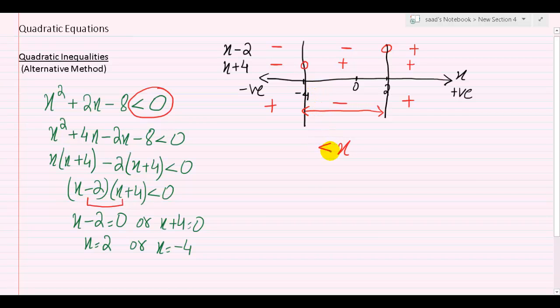x is greater than negative 4, and x is less than 2. So here we have an alternative method to solve a quadratic inequality.